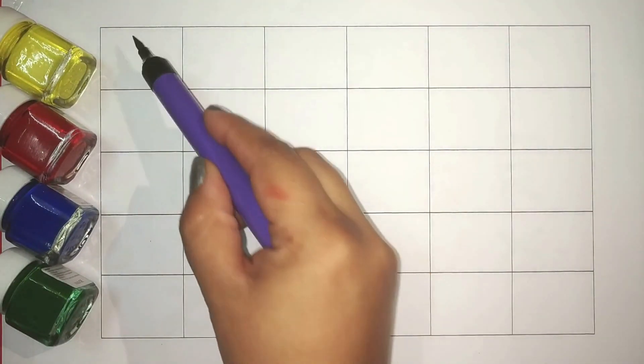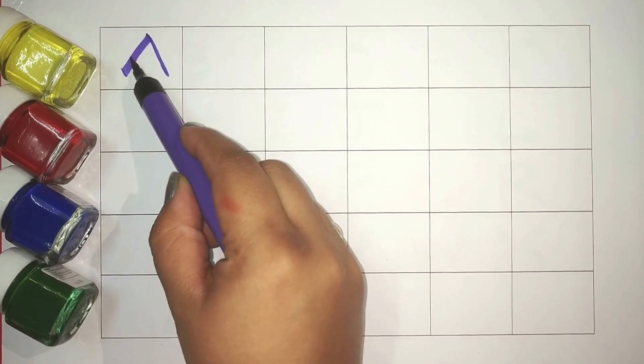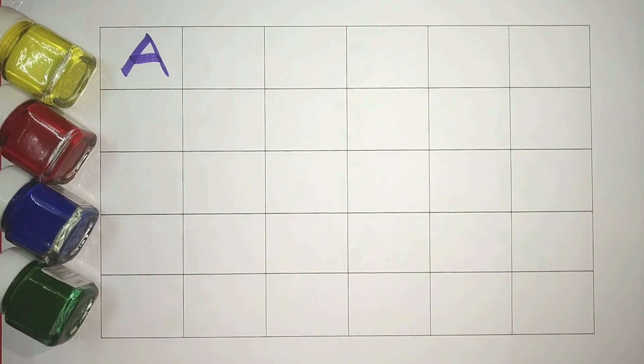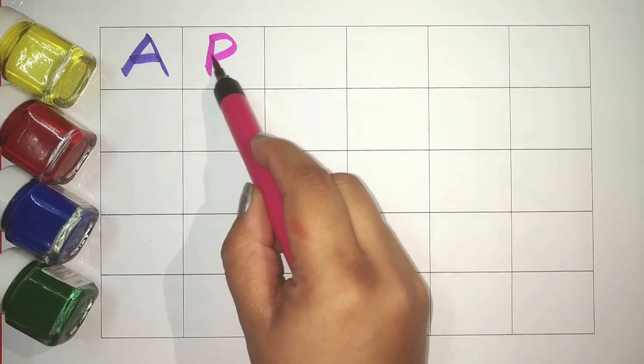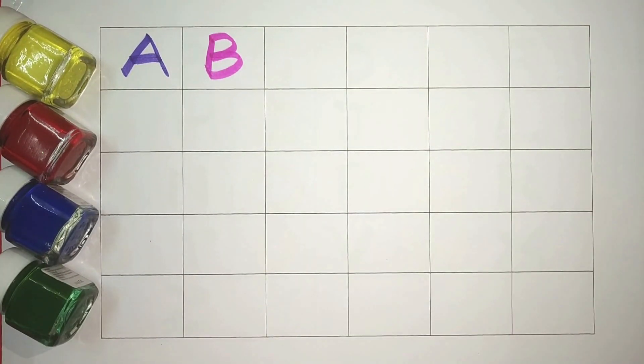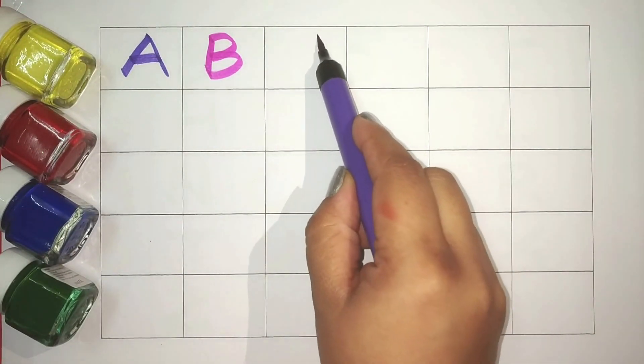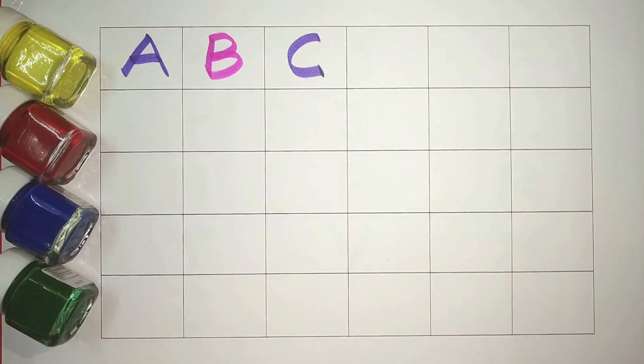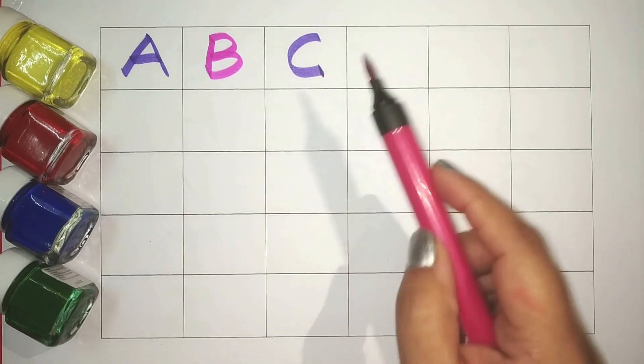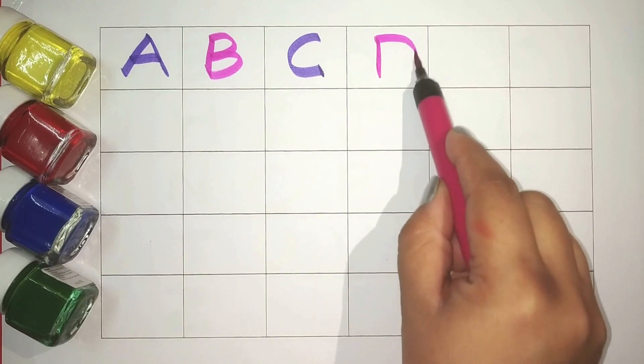Purple A. A for apple. Pink B. B for ball. Purple C. C for cat. Pink D. D for dog.